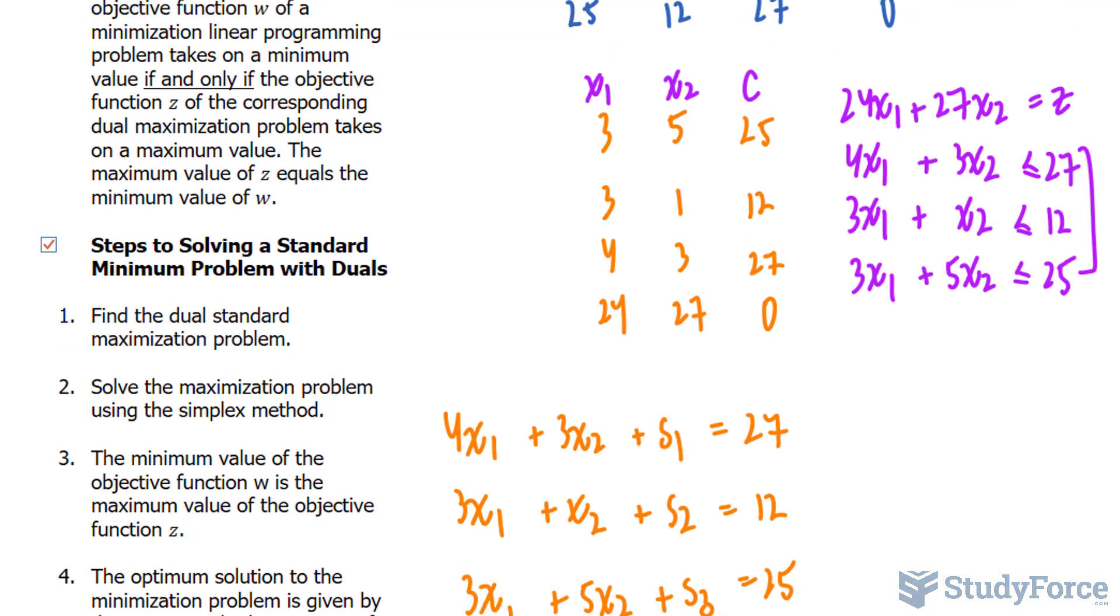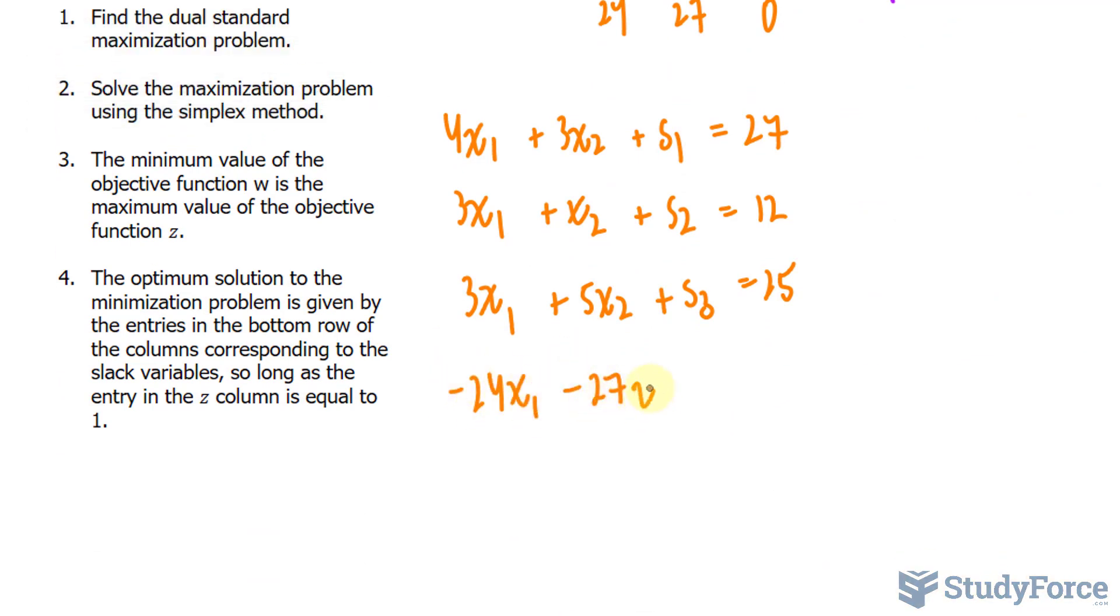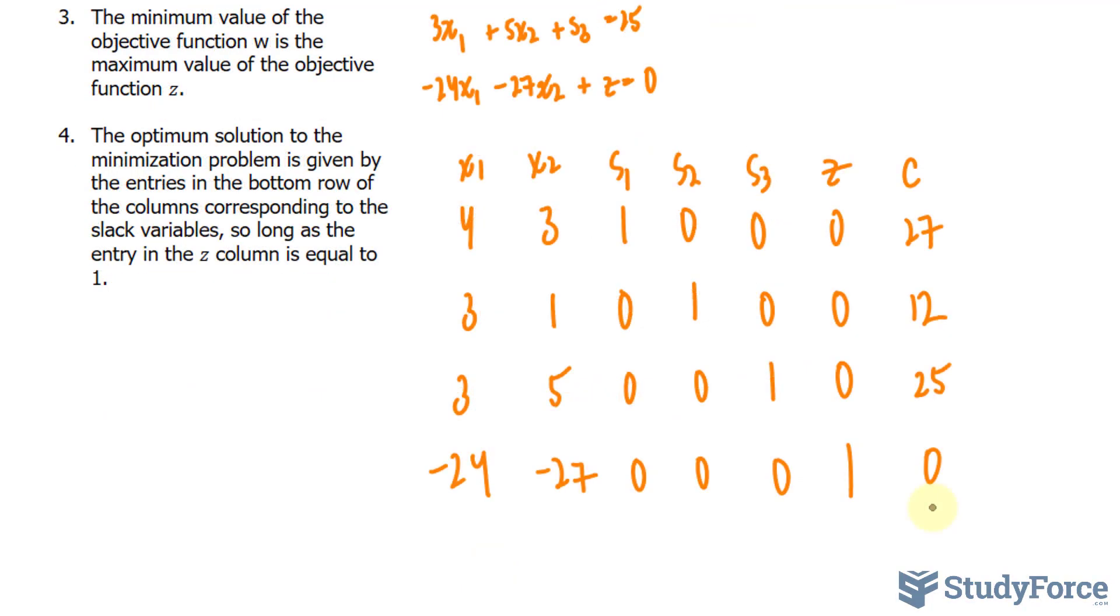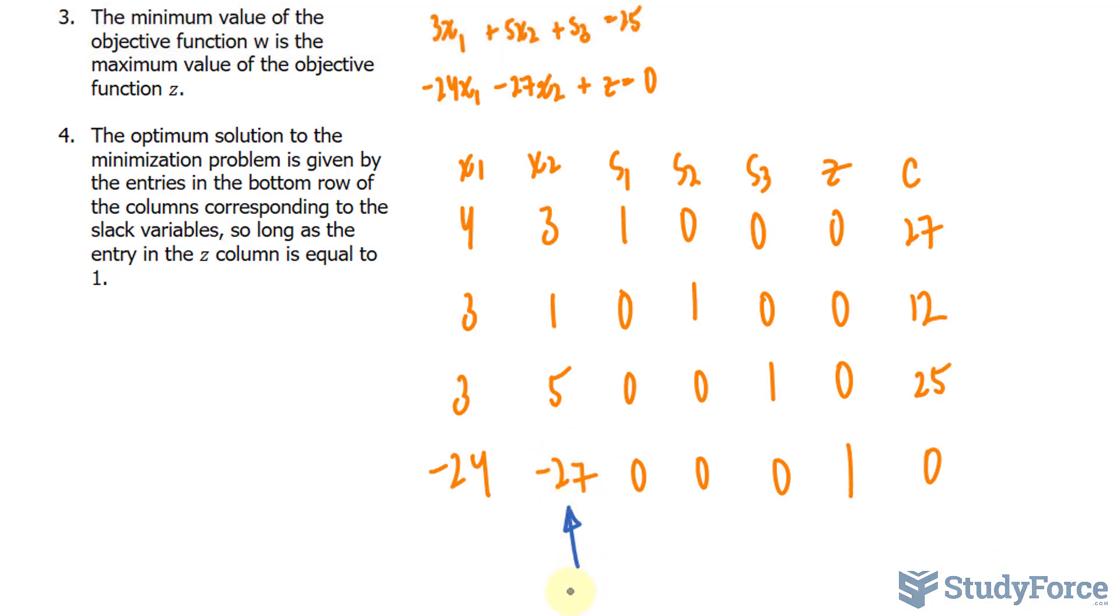And the objective function always needs to be written at the end. So we have 24x₁ plus 27x₂. I'll take these two terms over to the right side, so that the left side is equal to 0. If I move those terms over to the right side, they become negative. So we have -24x₁ minus 27x₂, you don't need a slack variable because it's already an equation, plus z is equal to 0. Now that we have four equations, I need to change this into an augmented matrix. We won't include the variables; the variables will serve as the columns. So this is our initial simplex tableau, and we need to maximize this. Just like before, we look for the most negative number. The most negative number is -27, that's our negative indicator.